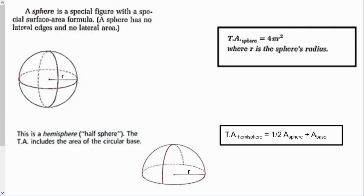A sphere is a special figure with a special surface area formula, because a sphere has no lateral edges and no lateral area. That formula is: total area of a sphere = 4πr², where r is the sphere's radius. For a hemisphere, or half sphere, the total area also includes the base. So the total area of a hemisphere equals half the sphere's area plus the base area: 2πr² + πr² = 3πr².